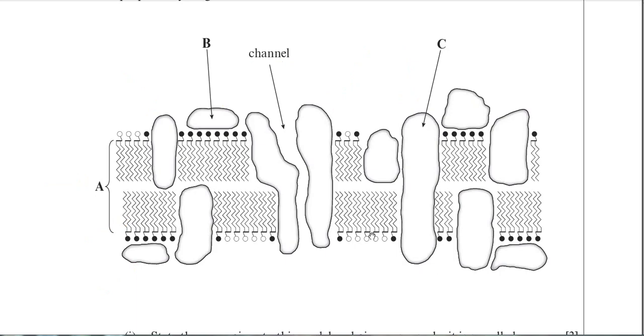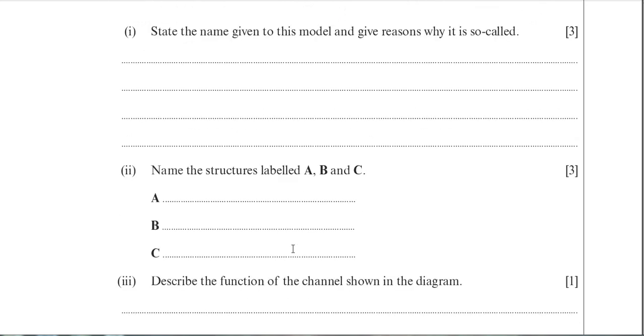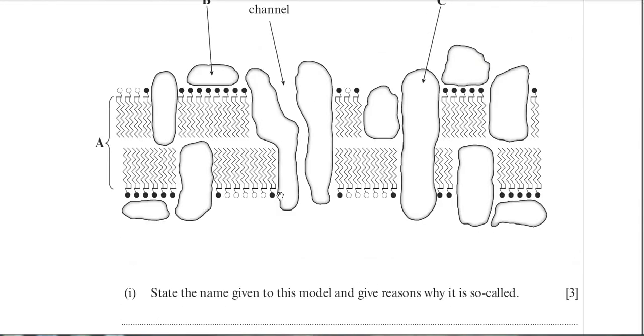So if we scroll down to the first question: state the name given to this model and give reasons why it is so called. Well, it's the fluid mosaic model, of course. That's something you need to remember. It's called that because it's the proteins within the membrane that form this mosaic or pattern-like appearance. Really, the best view of the cell membrane would be to view it from above, and you can really see the different patterns and shapes created by the different proteins embedded in the bilayer. That's why it's called a mosaic - because of the patterns created by the proteins.